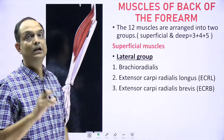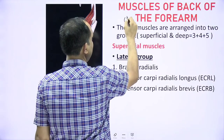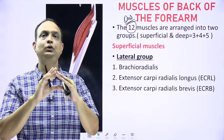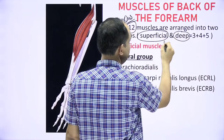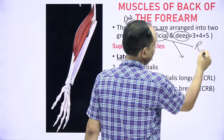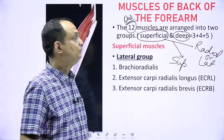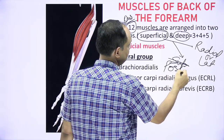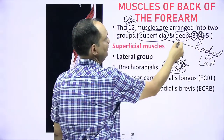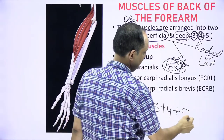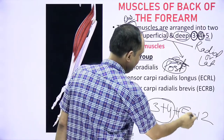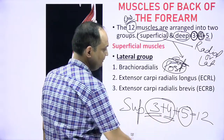There are 12 muscles in the posterior compartment — an important exam fact. These 12 muscles are arranged in two groups: superficial and deep. The superficial group is further divided into lateral (radial) muscles and posteriorly placed muscles. The lateral group has 3 muscles, the posterior group has 4 muscles, giving 7 superficial muscles total, and the deep group has 5 muscles.